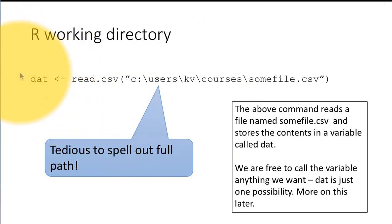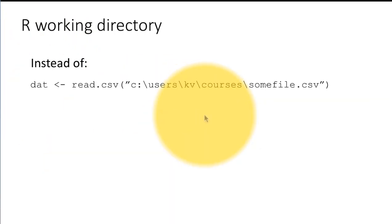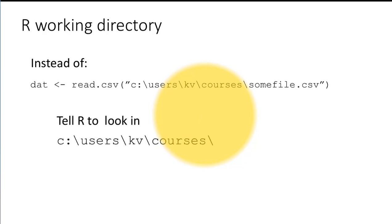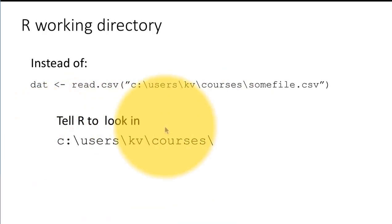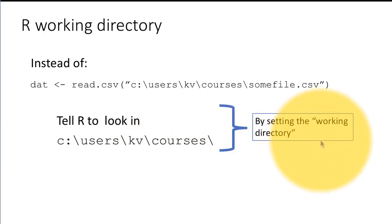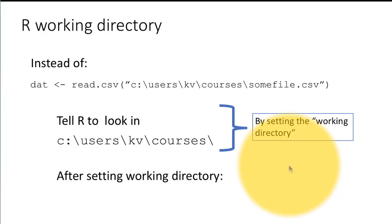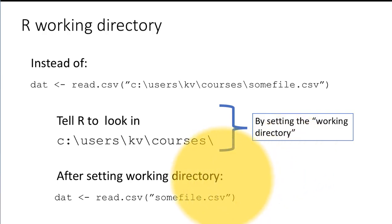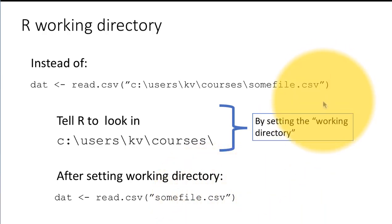Dat is just a variable whose name we have a good deal of freedom to choose. Instead of doing this, which is tedious, we have an option to tell R: whenever I am looking for a file, please look in this particular directory. We do that by setting the working directory. So the working directory is nothing but the default place — default directory or default folder — where we are asking R to look for any files that we reference. Once you set it, you can say dat <- read.csv('some_file.csv'), and because we have told R to look here, R is going to look in that particular place and find the file, assuming the file is already there.